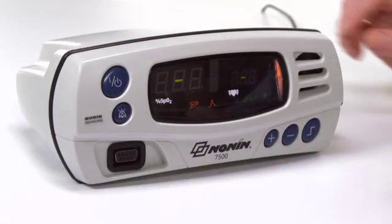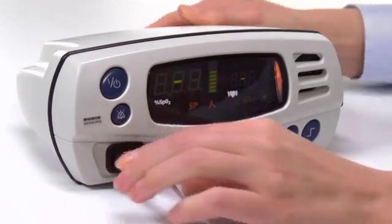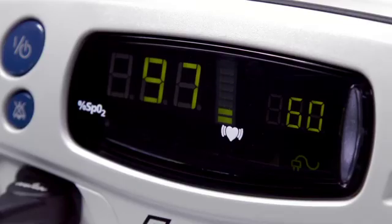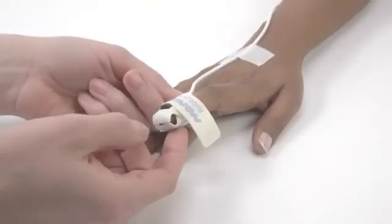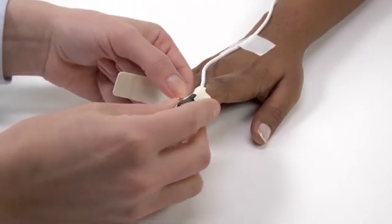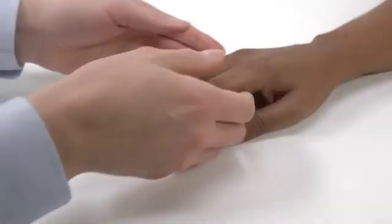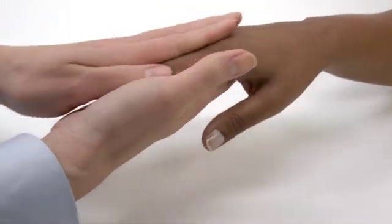You're ready to plug the sensor into the Nonin pulse oximeter to measure oxygen saturation and pulse rate. Nonin pulse oximeters have a pulse signal quality display that measures the sensor signal. If the signal is low, the emitter and detector may not be in proper alignment. Reposition the sensor to see if a stronger signal can be obtained. If repositioning does not increase the signal quality, try a different site or check that the patient's hand is warm, relaxed, and well perfused.